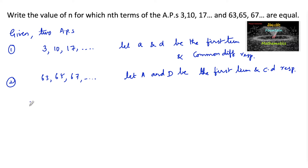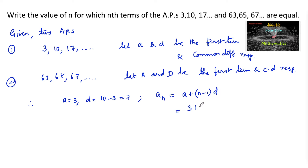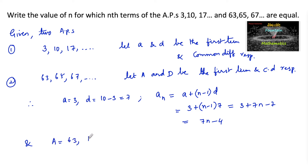For the first sequence, a = 3 and d = 10 − 3 = 7. The general nth term of the first sequence is: a_n = a + (n − 1)d = 3 + (n − 1) × 7 = 3 + 7n − 7, which simplifies to 7n − 4.